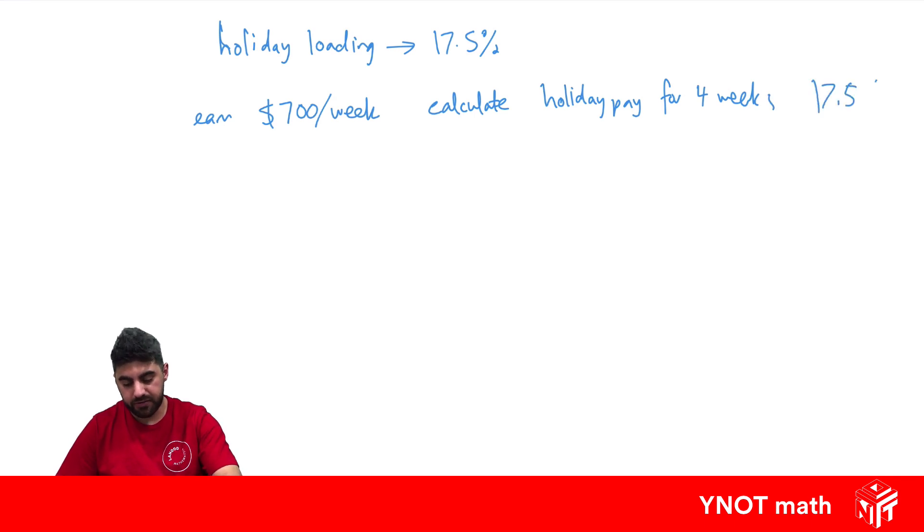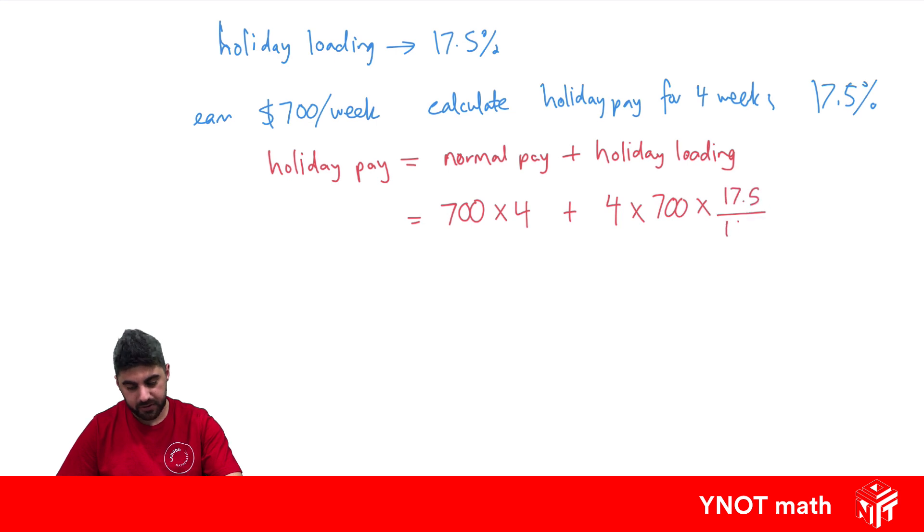If the holiday loading is 17.5%, your holiday pay is going to be your normal pay plus the holiday loading. So if you normally earn $700 a week and you're going on holidays for four weeks, we do 700 times 4, plus the extra 17.5% for those four weeks. So we do another 4 times 700, multiply that by 17.5%, and if you put all that in the calculator, you're going to get $3,290.